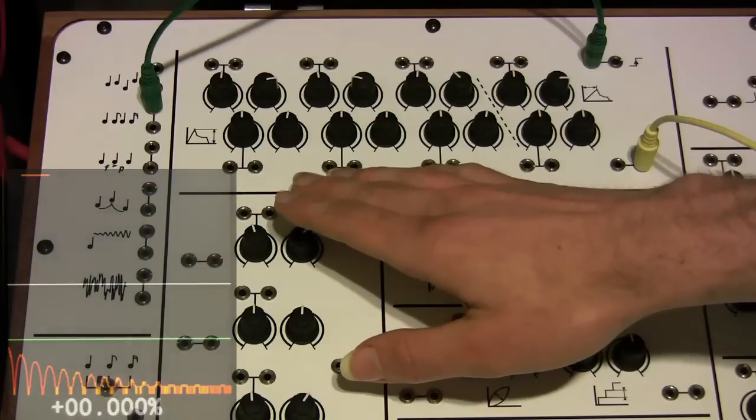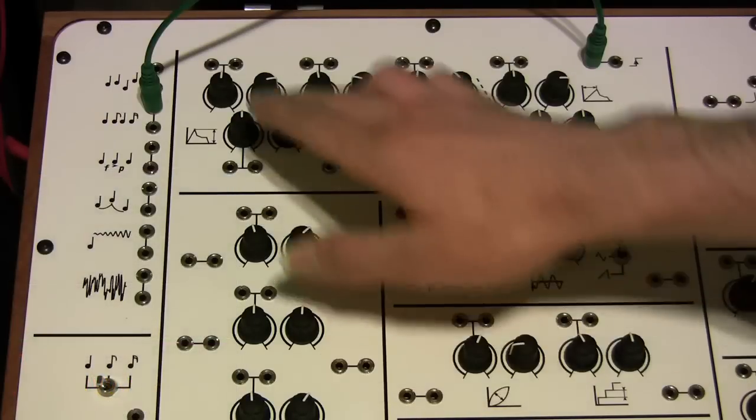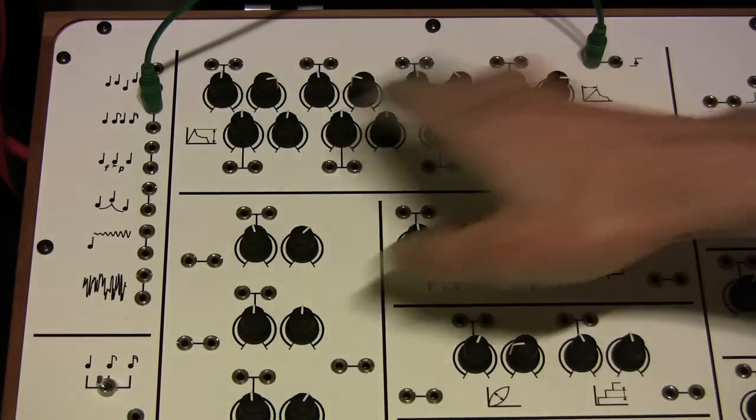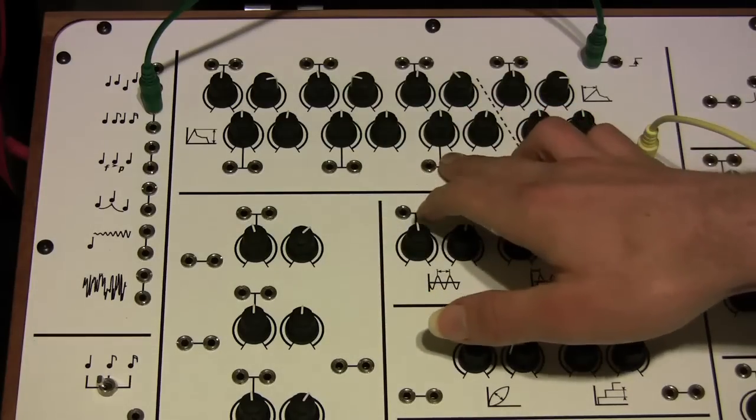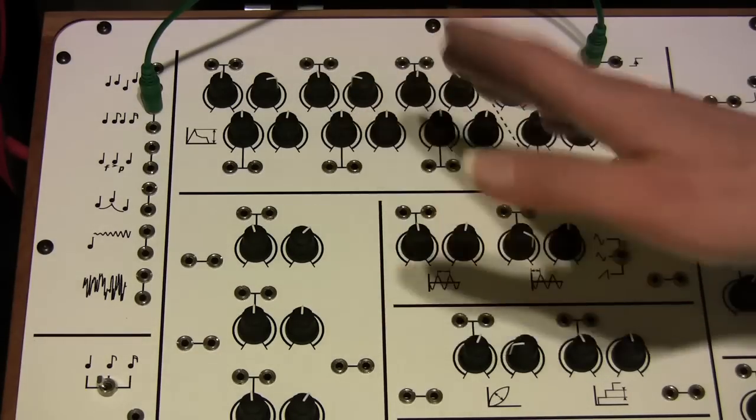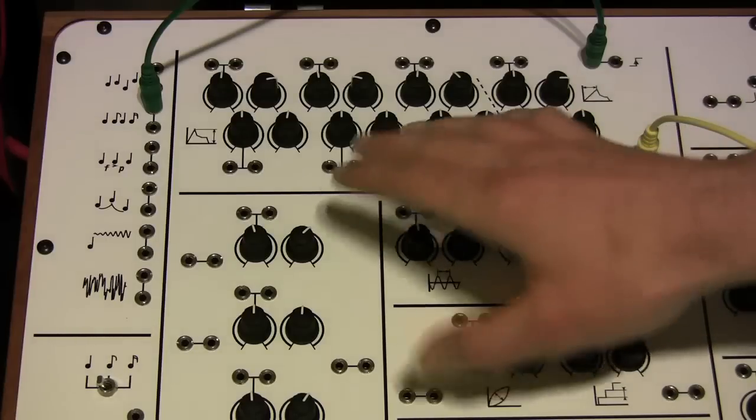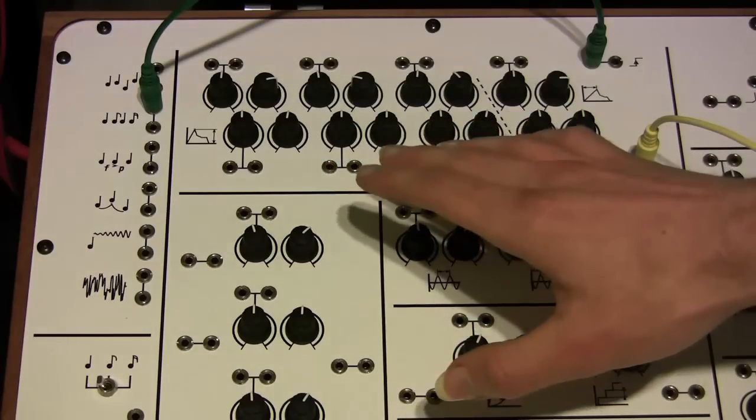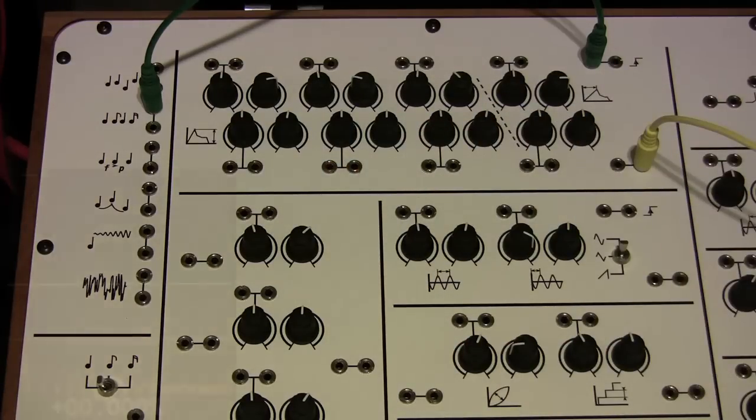This envelope is slightly unusual in that it has rates and destinations rather than times and levels, but we can still demonstrate the basic types of envelope using these.